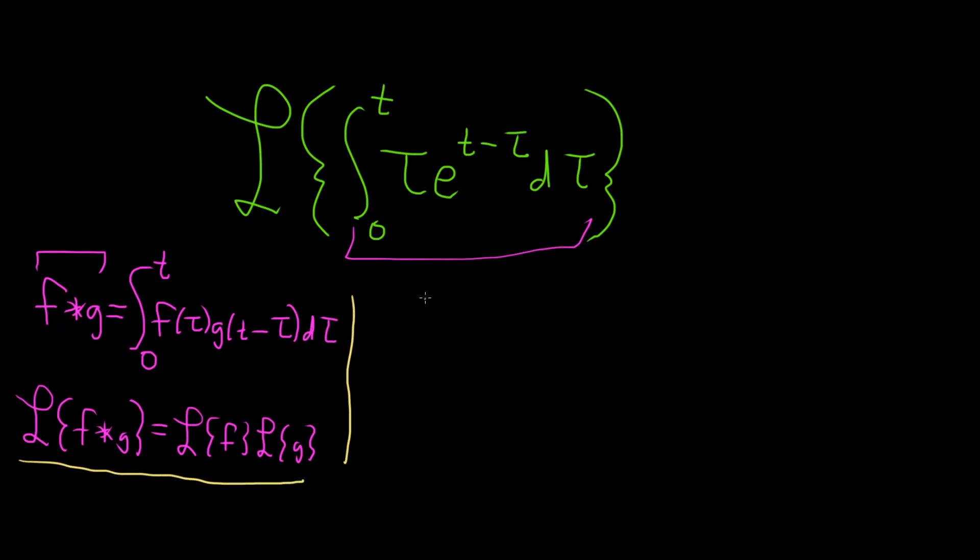So it looks like it's pretty simple to identify f. f is simply going to be t. And that way f of tau is just tau. And then g of t is going to be e to the t. And that way, g of t minus tau will actually be e to the t minus tau. So it works out perfectly. So it matches everything in a very nice way.